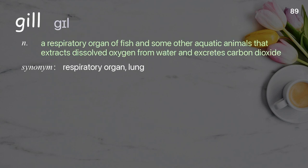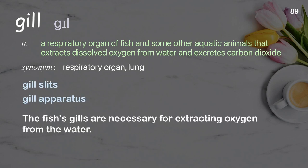Gill. A respiratory organ of fish and some other aquatic animals that extracts dissolved oxygen from water and excretes carbon dioxide. Examples: gill slits, gill apparatus. The fish's gills are necessary for extracting oxygen from the water.